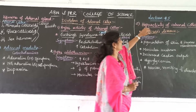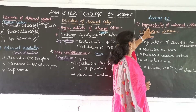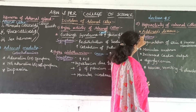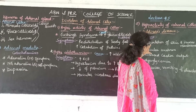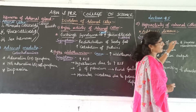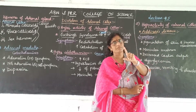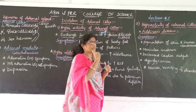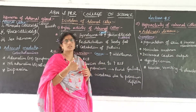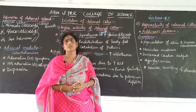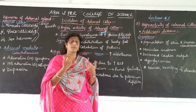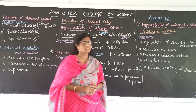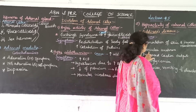This hypoactivity leads to Addison's disease. The primary symptom of Addison's disease is pigmentation of the skin and mucous membranes — abnormal pigmentation occurs throughout the body and on mucous membranes.